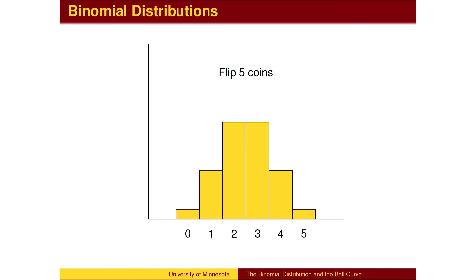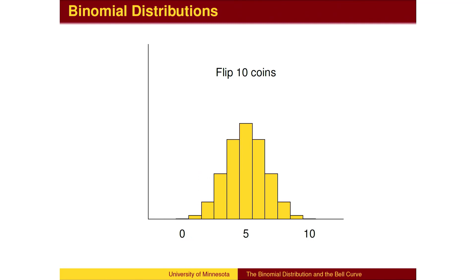We proceed to five flips and ten flips. The central bar, which represents five heads, is now getting thin. The probability of getting exactly 50% heads is shrinking, but most of the probability is gathered close to this central average.